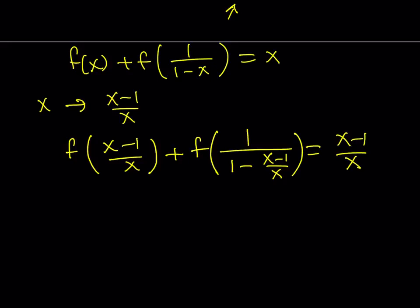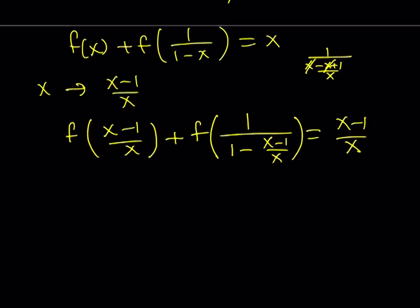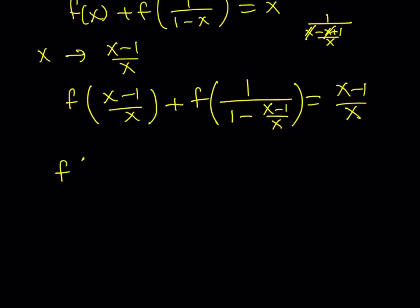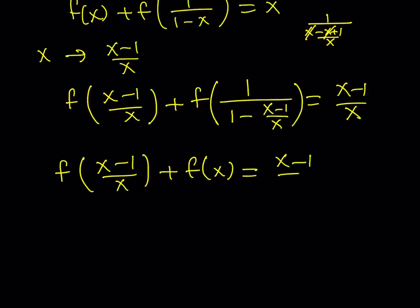Let's simplify the expression inside the second f. It gives us (x minus x plus 1)/x, but taking the reciprocal, the x cancels, and you get f(x). So equation 3 becomes: f((x-1)/x) + f(x) = (x-1)/x. That's exactly what we wanted.